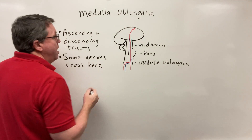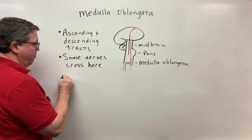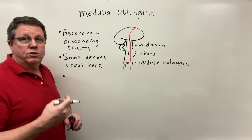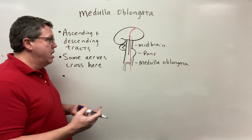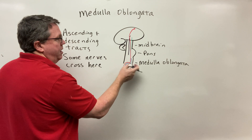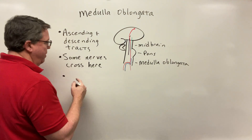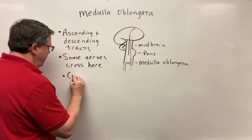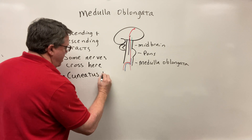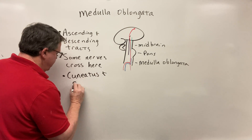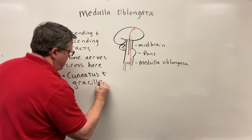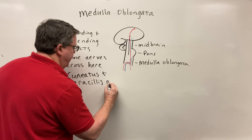The fasciculus cuneatus and the fasciculus gracilis synapse in the medulla oblongata, so they have nuclei here — specifically the cuneatus and gracilis nuclei.